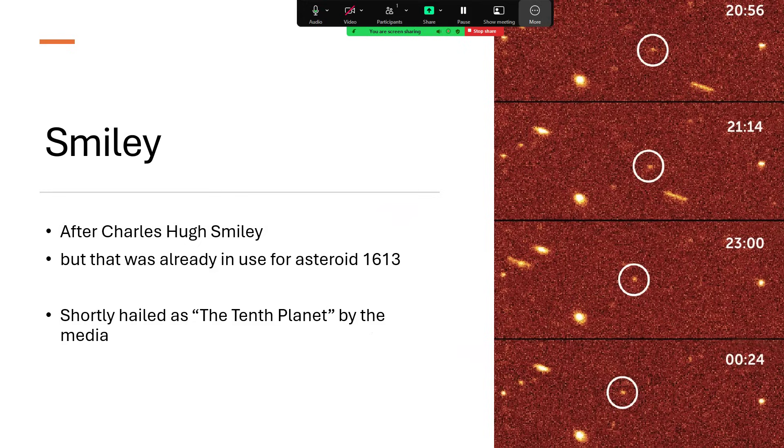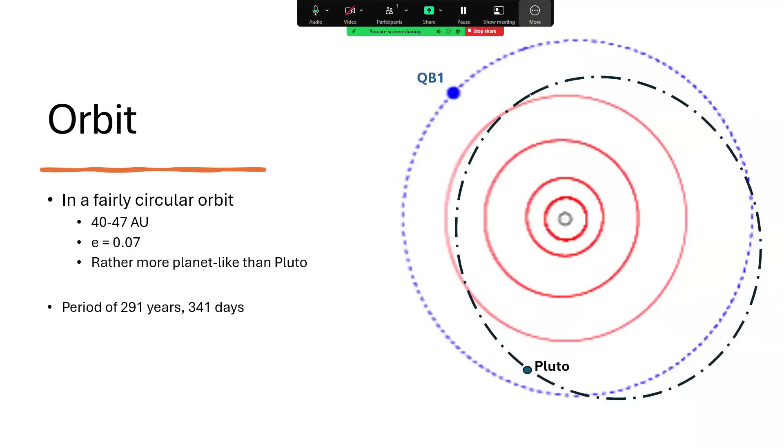Soon after the discovery and characterization of the orbit of this object QB1, it was recognized as a possible candidate for being the 10th planet of the solar system. That was because we had at the time nine planets: the inner planets Mercury, Venus, Earth, Mars; the outer planets Jupiter, Saturn, Uranus, and Neptune; and Pluto was included as the ninth planet at this time.